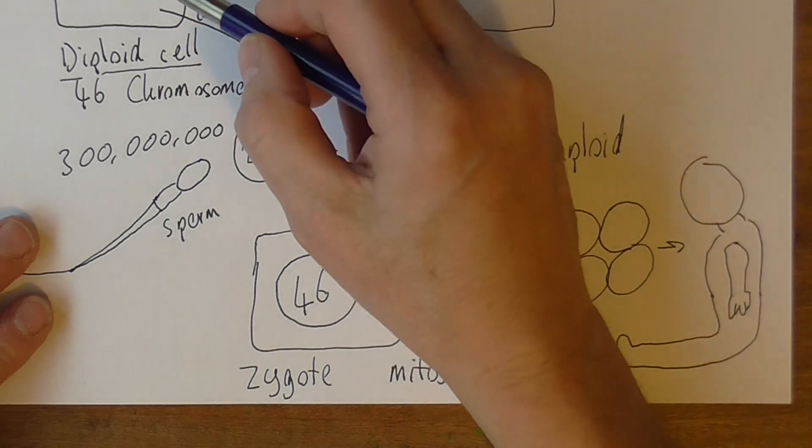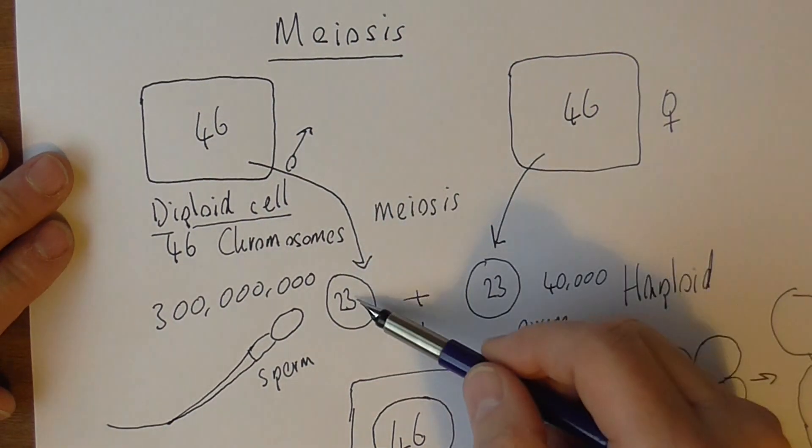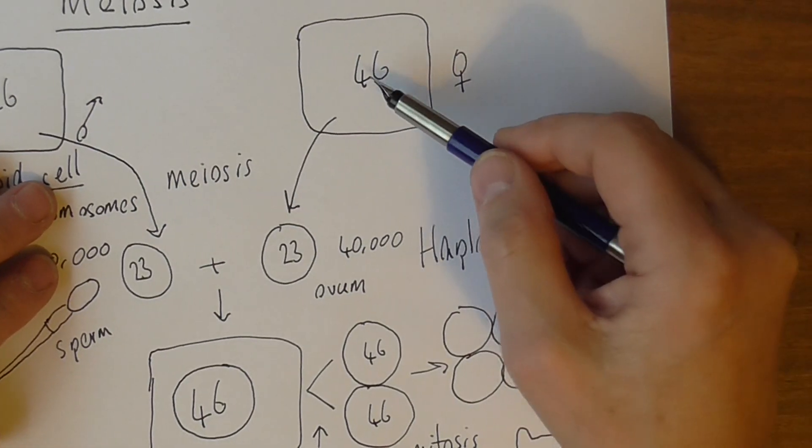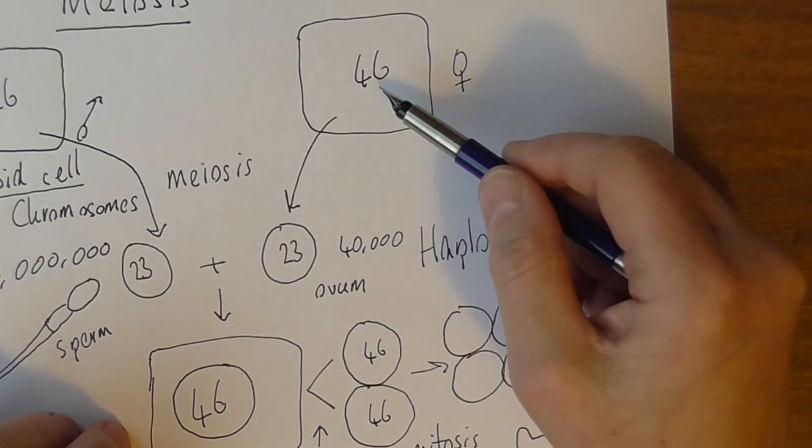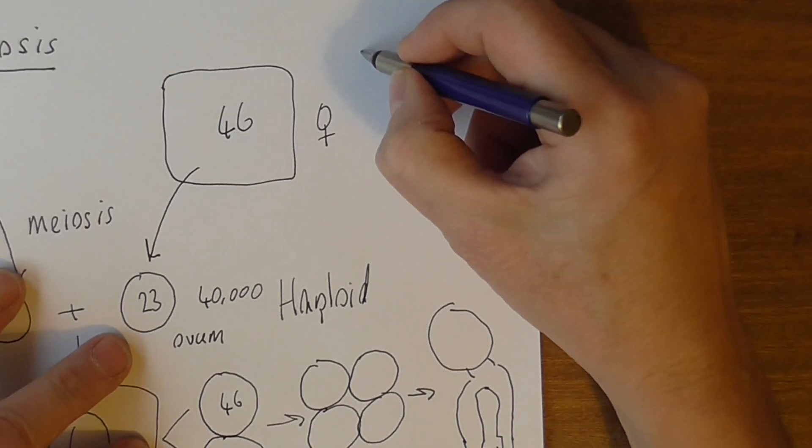So the 23 pairs of chromosomes in this cell here, we get one of each pair in the haploid cell. The 46 chromosomes here in the dad, we get one of each pair. There's like a pair of chromosomes.